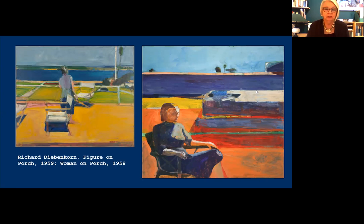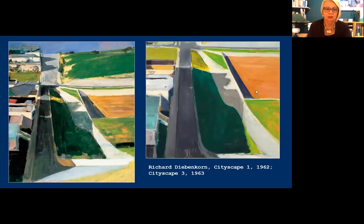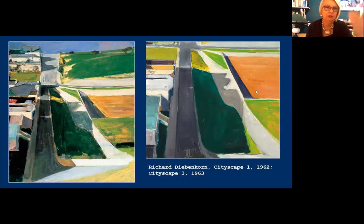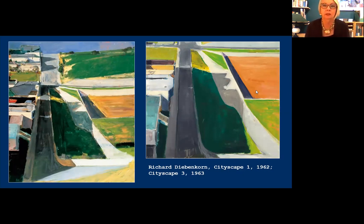Of course, the city is also a fit landscape subject. Here are two city views from the early 60s, in which we can see Diebenkorn increasing his reliance on shape. In the one on the left, if you put your hand up and block out the left side of the painting where you can see buildings, look at the other side — it really just looks like an abstract work of shapes. When you look at the other side, we can see it's a street.